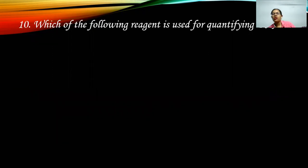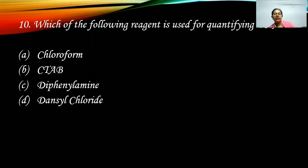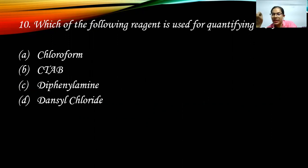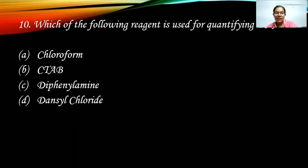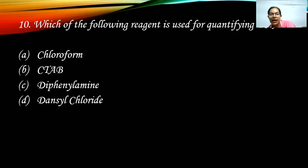Which reagent is used for quantifying DNA? Options are chloroform, CTAB, diphenylamine, or Dansyl chloride. If you are not using a NanoDrop, you can use the colorimetric method. A helpful trick: diphenylamine has an amino group and always gives a bluish color. The answer is diphenylamine. DNA contains 2-deoxyribose; in acid conditions, deoxyribose is converted into hydroxyllevulinic aldehyde, which reacts with diphenylamine to give a bluish-green color.